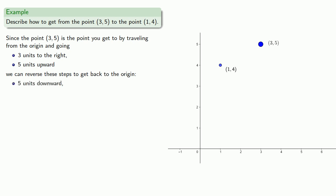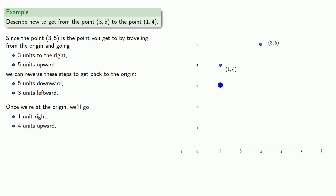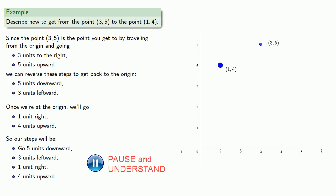So we'll go five units downward and three units leftward. Once we're at the origin, we can get to the point (1, 4), because its coordinates tell us how to get there — one unit to the right and four units upward. Altogether, our sequence of steps is: go five units downward, three units leftward, then one unit to the right, and four units upward. In some places, that's how you navigate — you get back to a starting point and then navigate onward from there. It's sort of like driving in Boston. But having to return to the origin does seem a bit inefficient, so we might ask: is there a better way?